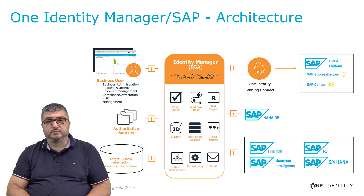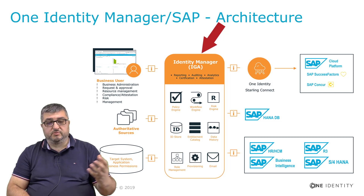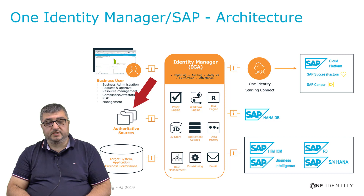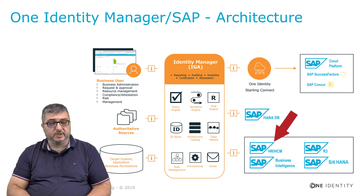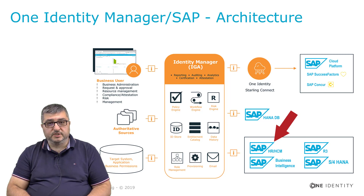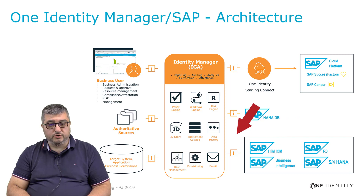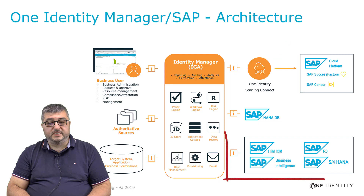One Identity Manager supports SAP in various ways. One Identity Manager requires authoritative sources to read employee, organization, and department information. This information can be provided from an SAP HR solution containing the org management module. The data provided by the HR module will be processed in the identity governance solution, and then provisioning to separate SAP solutions will be done through One Identity Manager, either directly through connected system modules or through One Identity StarlingConnect for SAP cloud offerings.